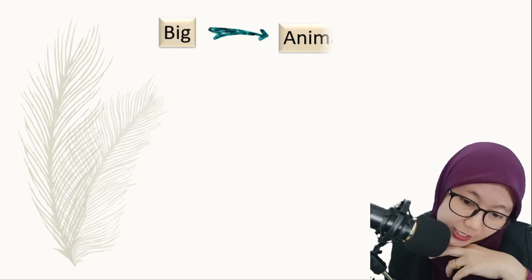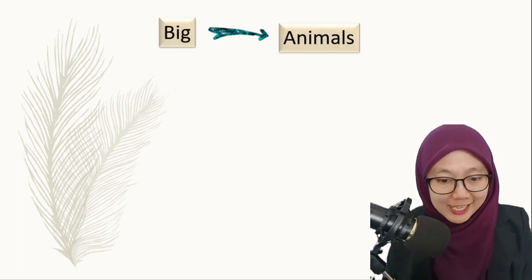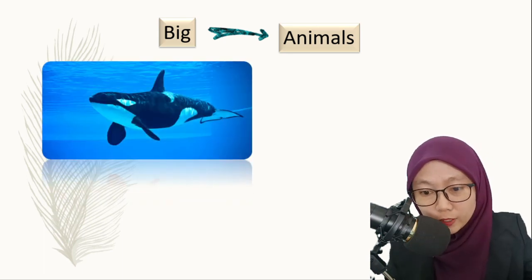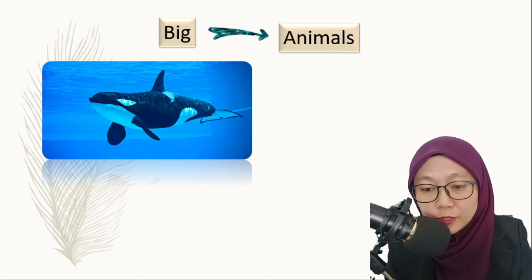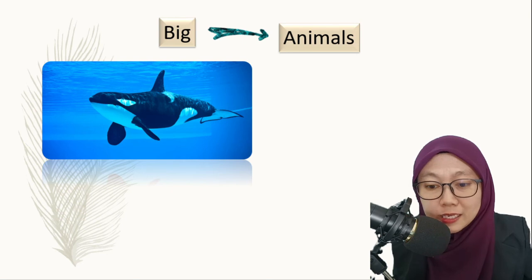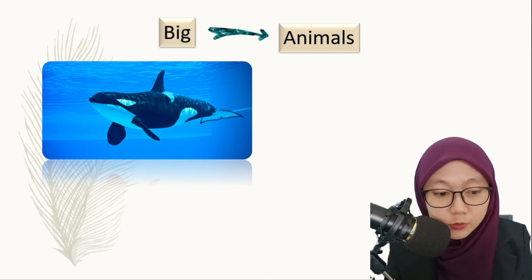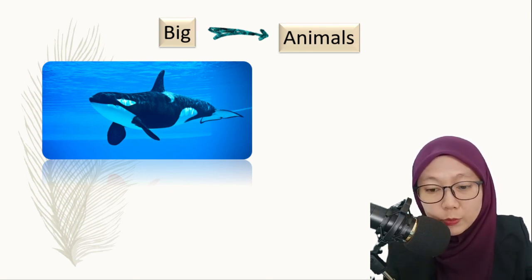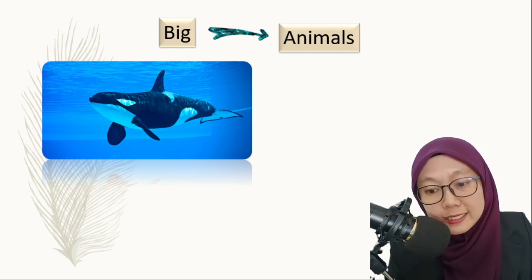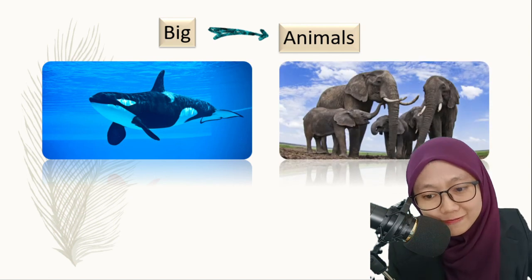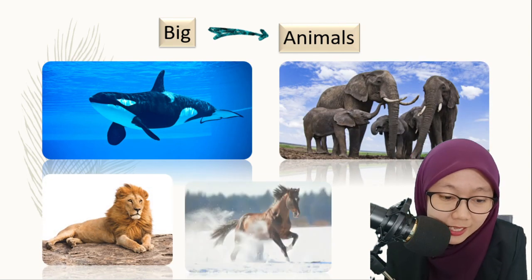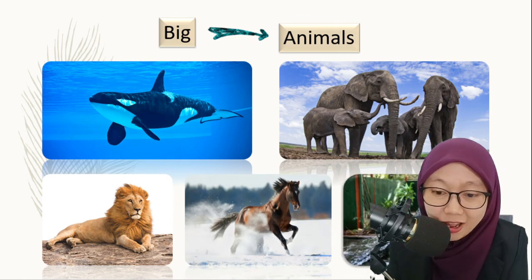Now let's move to big animals. Big animals can be a whale. Did you know that the blue whale is the most biggest animal? It can be up to 24 times the size of an elephant. This is a normal whale, but the blue whale — you can search it and see how big it is. Elephant is also a big animal, along with lion, horse, and crocodile.